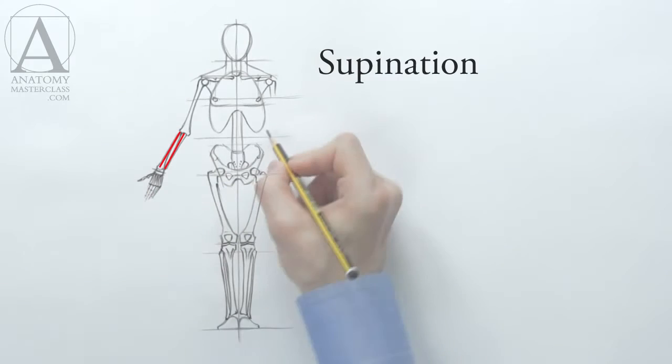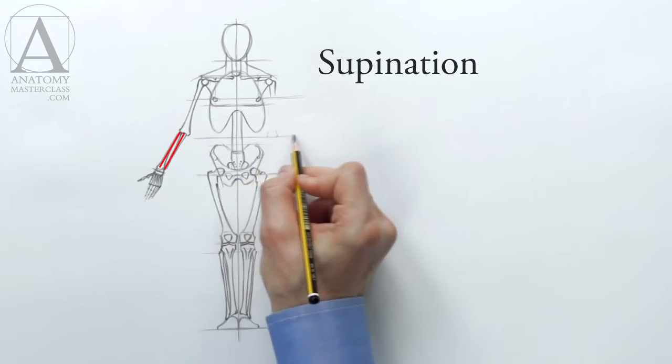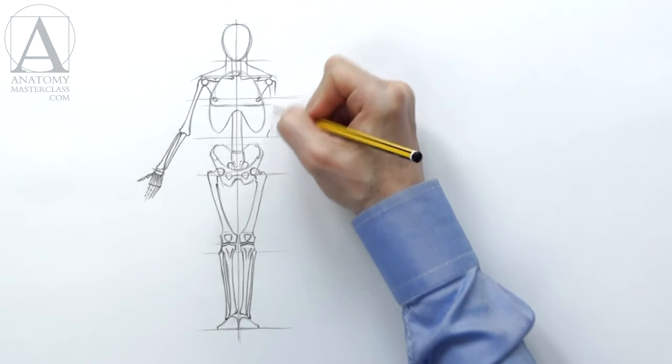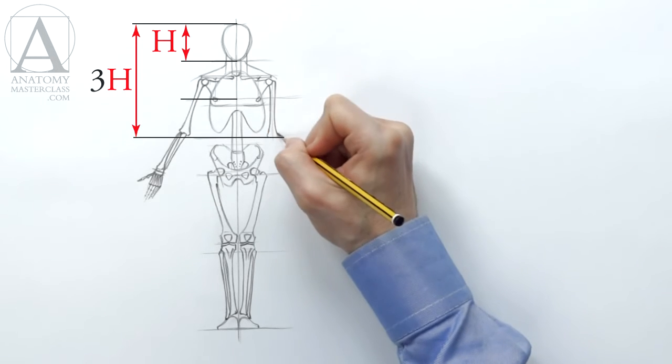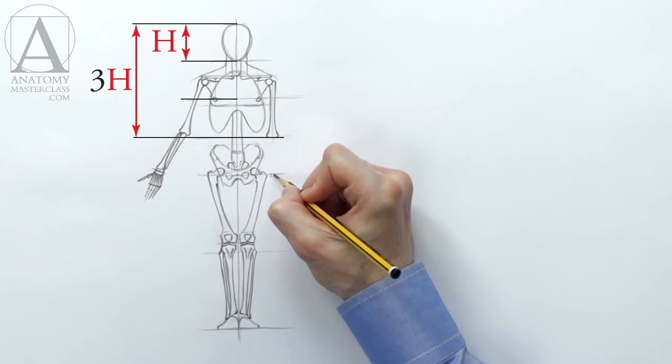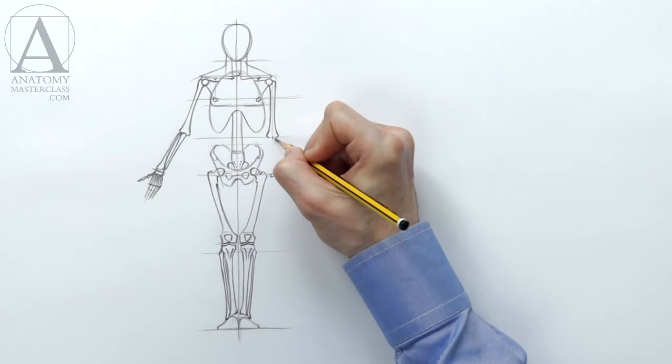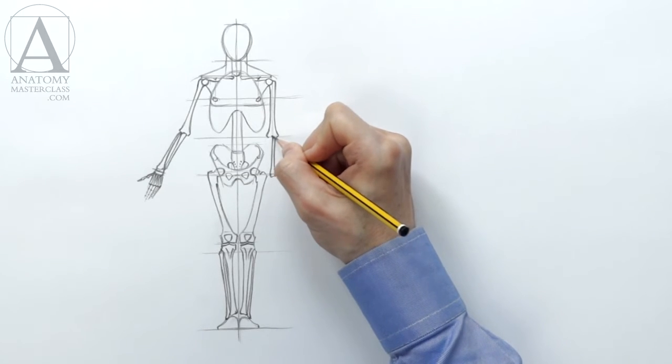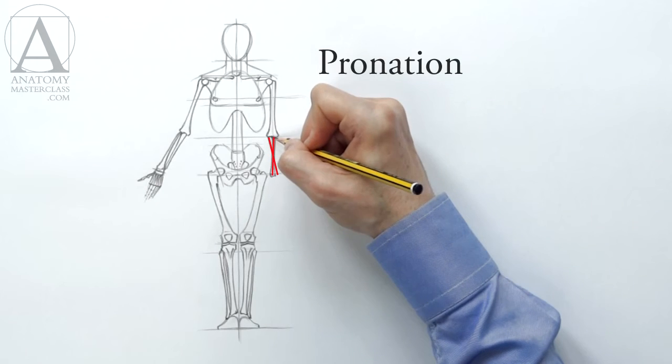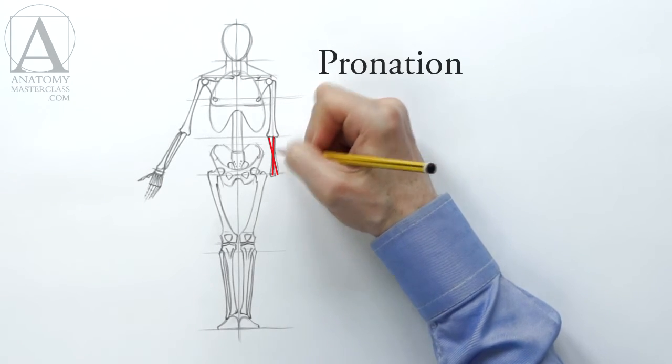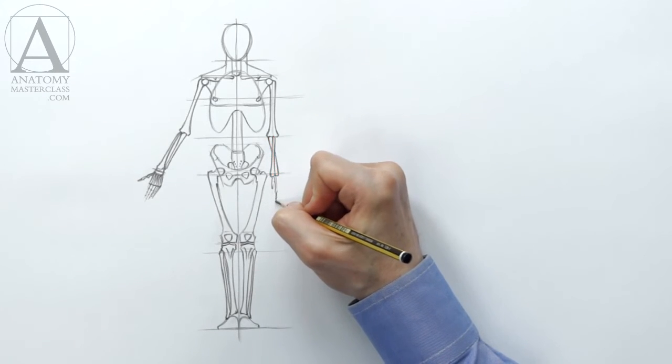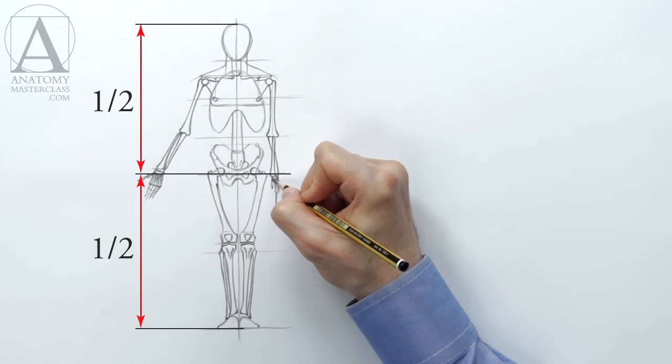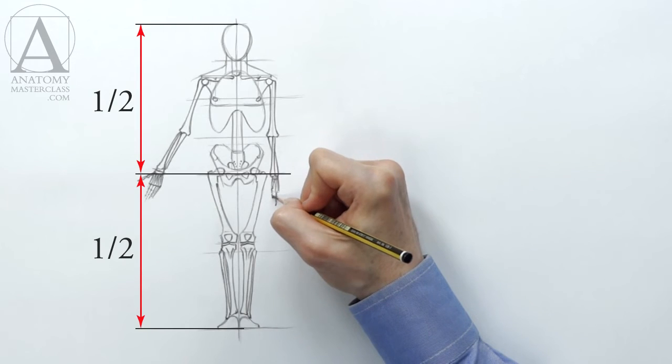The two bones of the right forearm on this drawing run parallel to each other. This position is called supination. I'll draw another arm. As you can see, the humerus ends at a level three times the head's height from the top of the figure. I'm drawing the forearm of this limb in the pronation position. Pronation is when the radius is rotated around the elbow bone and crosses it. The wrist position is on the same level as the pubic bone, halfway up the body.